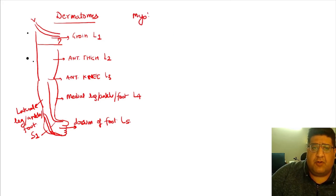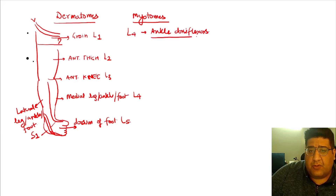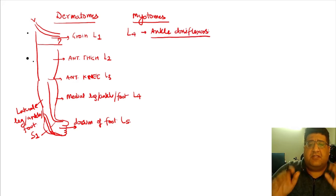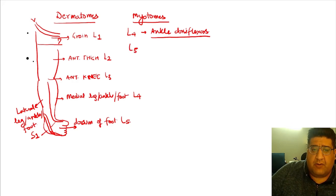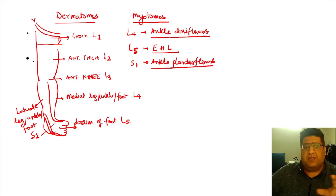Similarly, when we talk about myotomes, I don't advise remembering all of them, but at least remember: L4 is the myotome for ankle dorsiflexors — specifically tibialis anterior. L5 is the myotome for extensor hallucis longus. S1 is the myotome for ankle plantar flexors, which is the tendo Achilles — a combination of gastrocnemius and soleus. This basic knowledge of dermatomes and myotomes is compulsory.